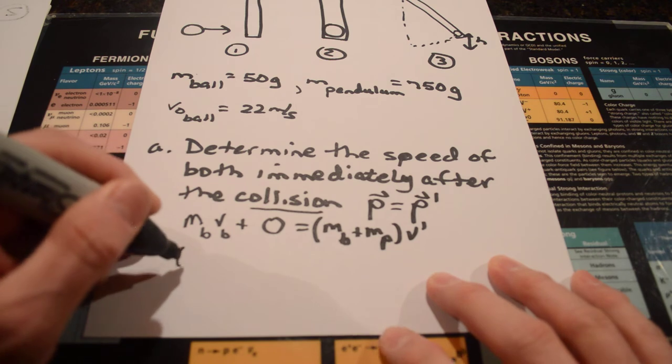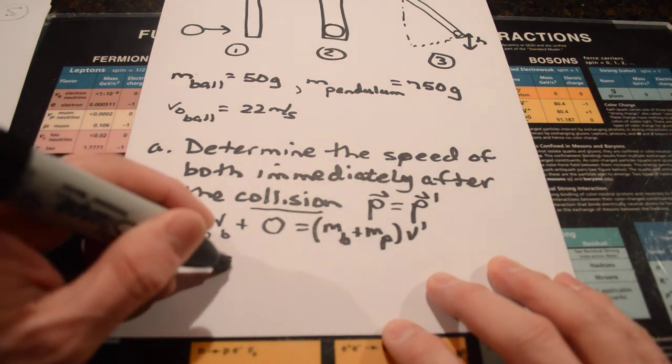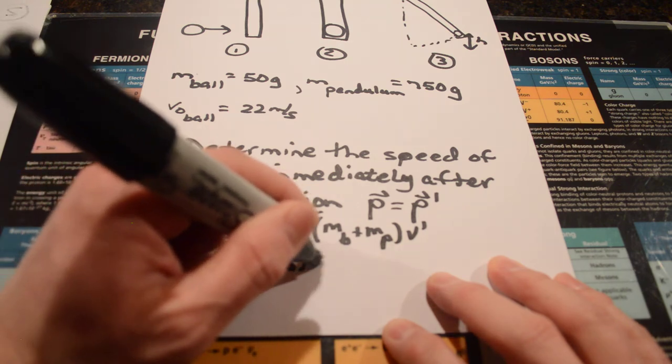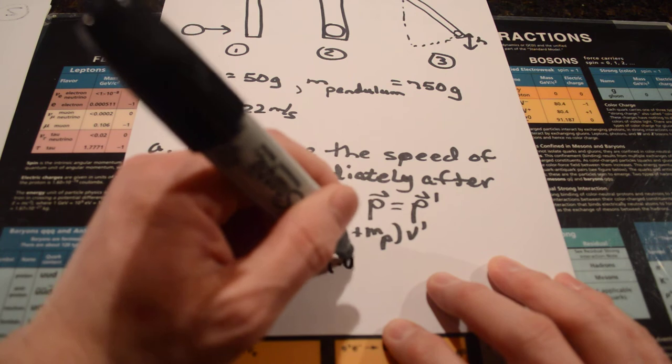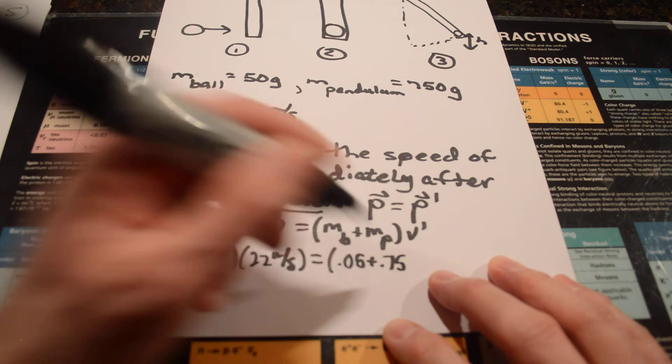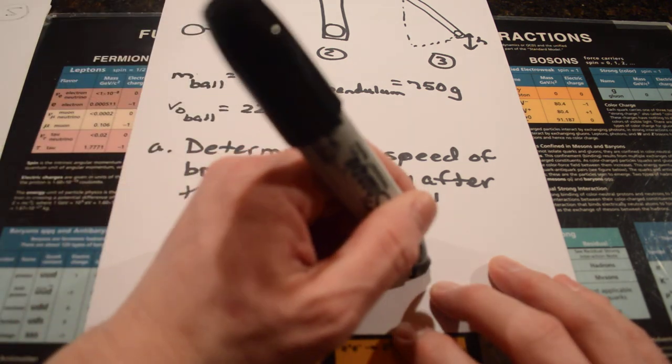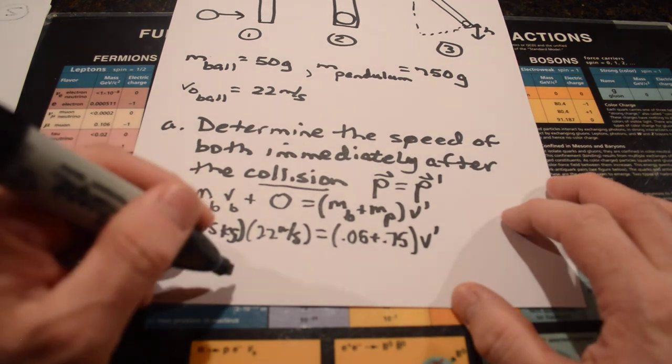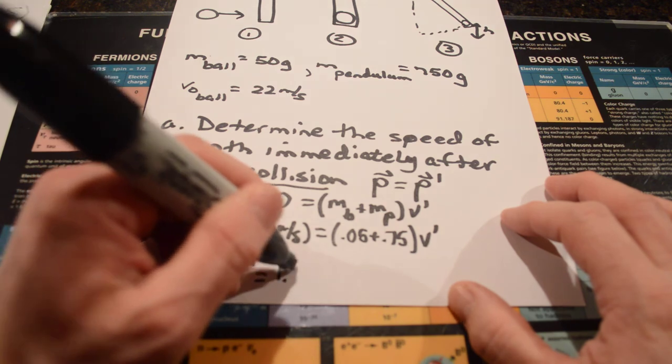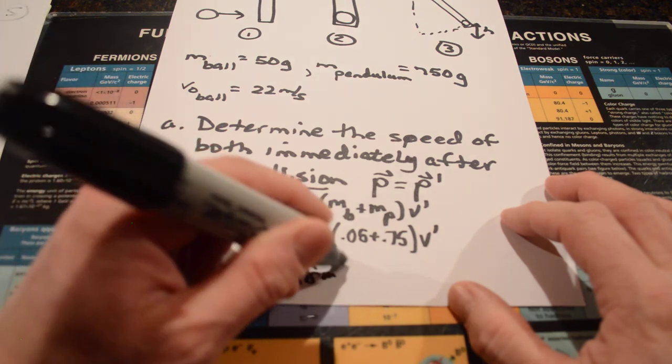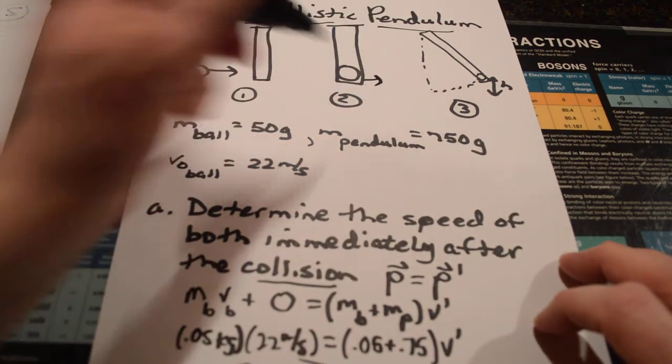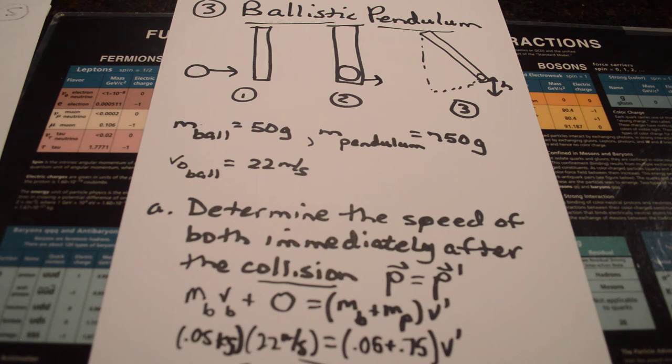Put in some numbers. This is 0.05, let's go kilograms, times 22 meters per second. And then that's equal to the mass of 0.05 plus 750 grams is 0.75. So, it looks like that's going to be 0.8 kilograms times the number. And, if you do the math on that, you get 1.38 meters per second as the speed of both of them right after the collision. Hopefully, that's making some sense.